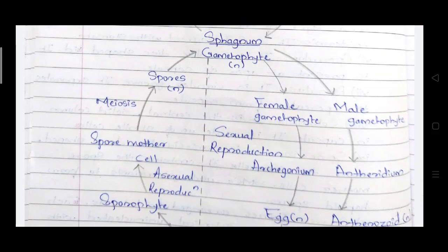This Sphagnum plant has two distinct generations: gametophytic and sporophytic generations. In Sphagnum, the dominant generation is the gametophytic generation, and the recessive is the sporophytic generation.